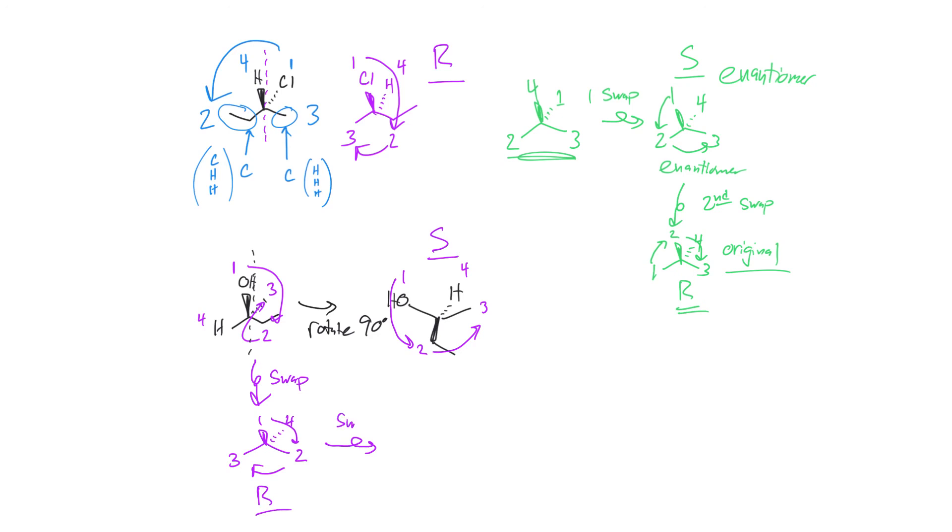Let's swap it again. And as long as I don't touch the four, I can get back to my original compound. So let's swap the one and the three. And now I count one, two, three. I get to S. So my original compound, I think I've confirmed that it was S by two different techniques.